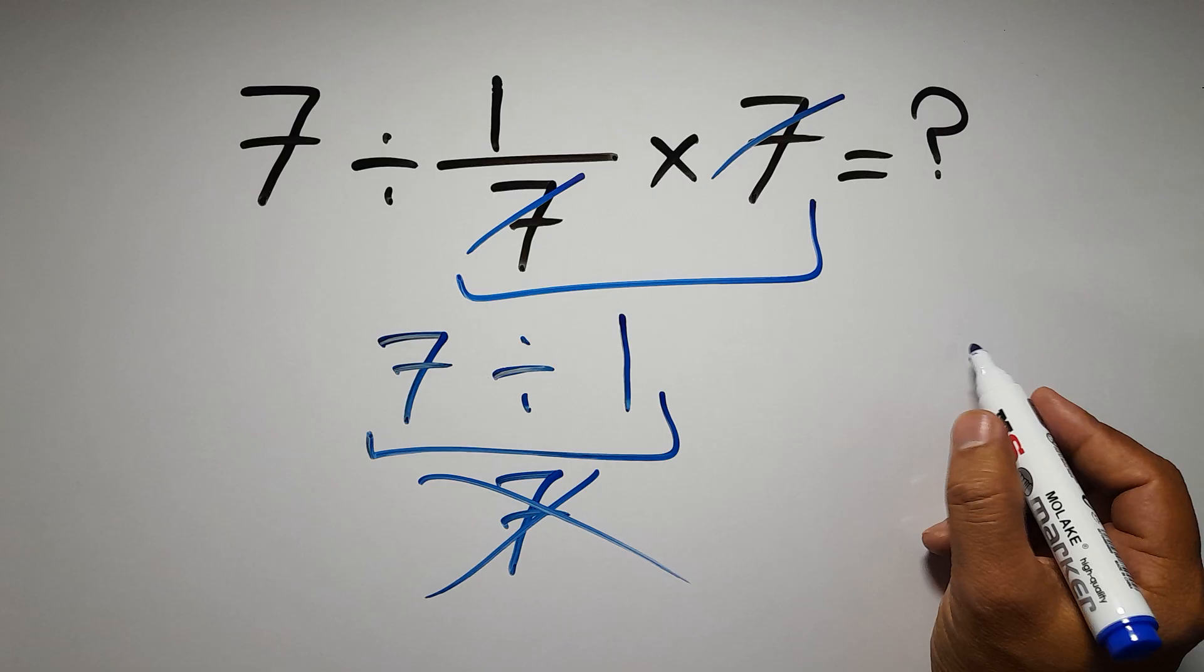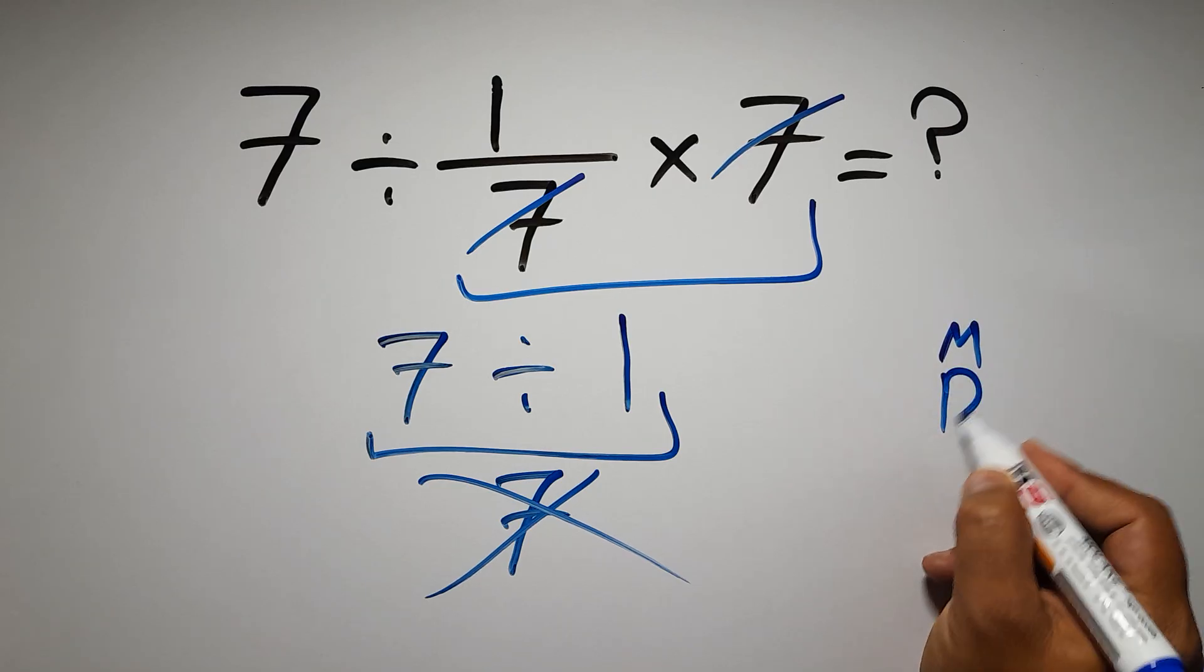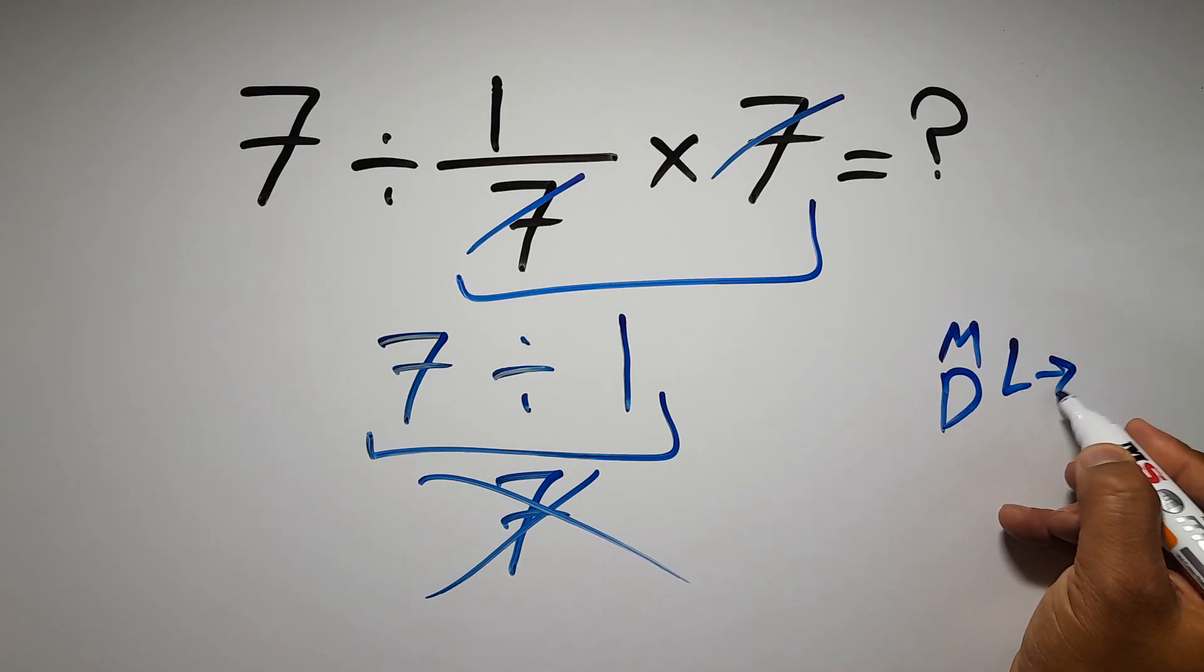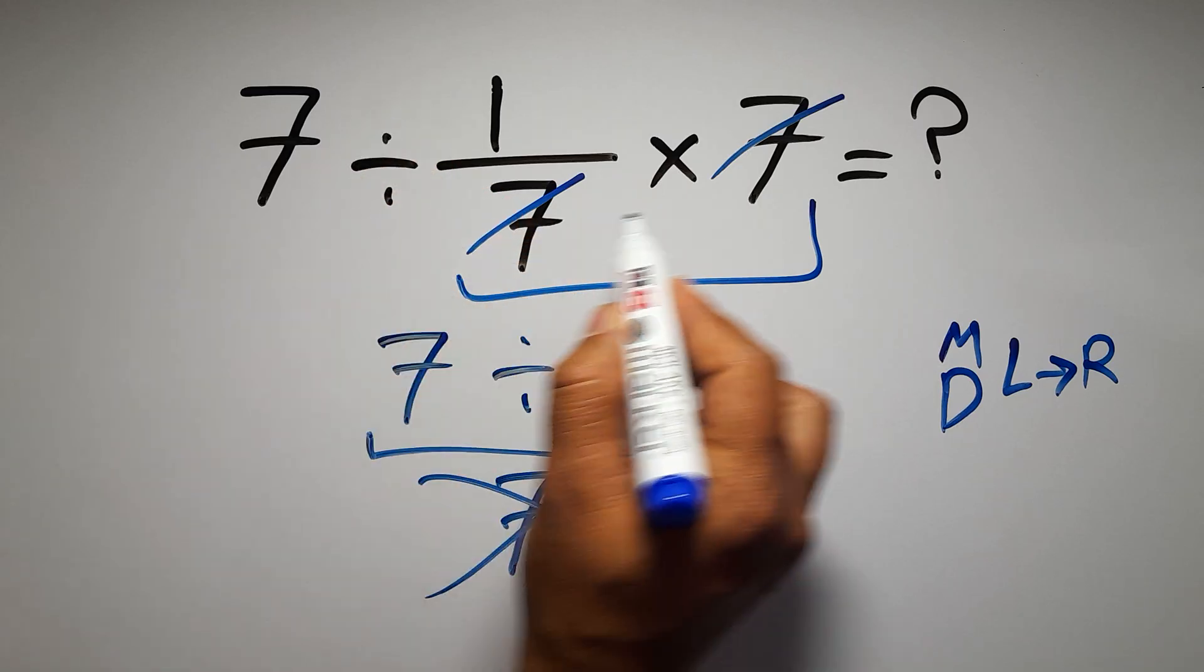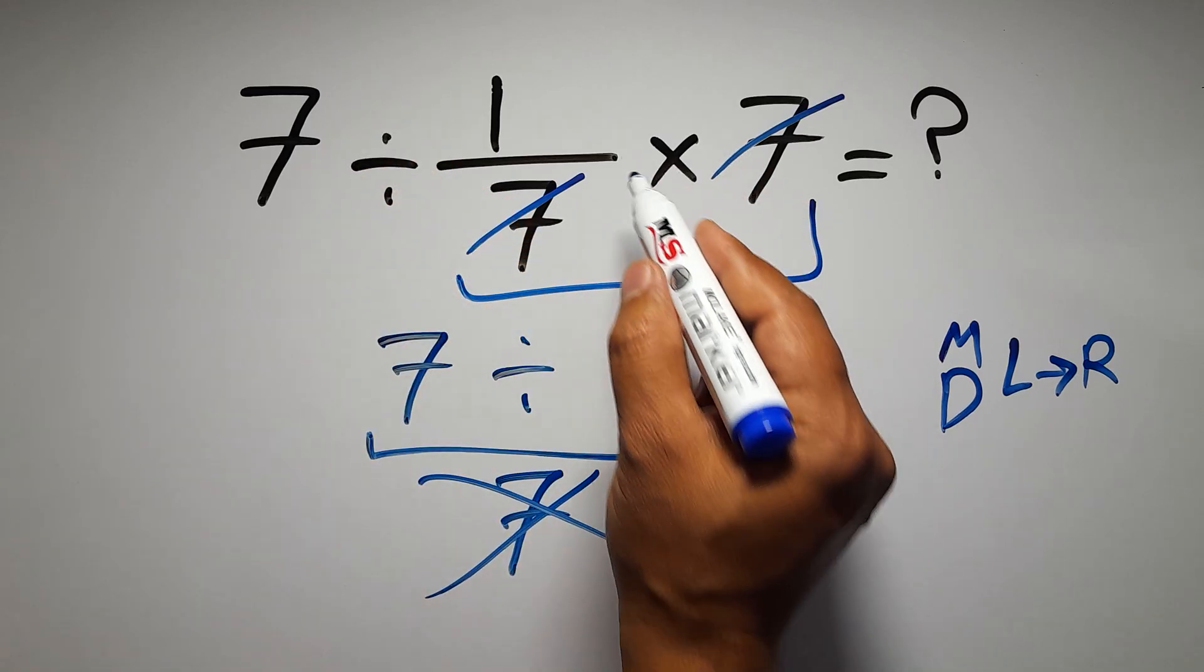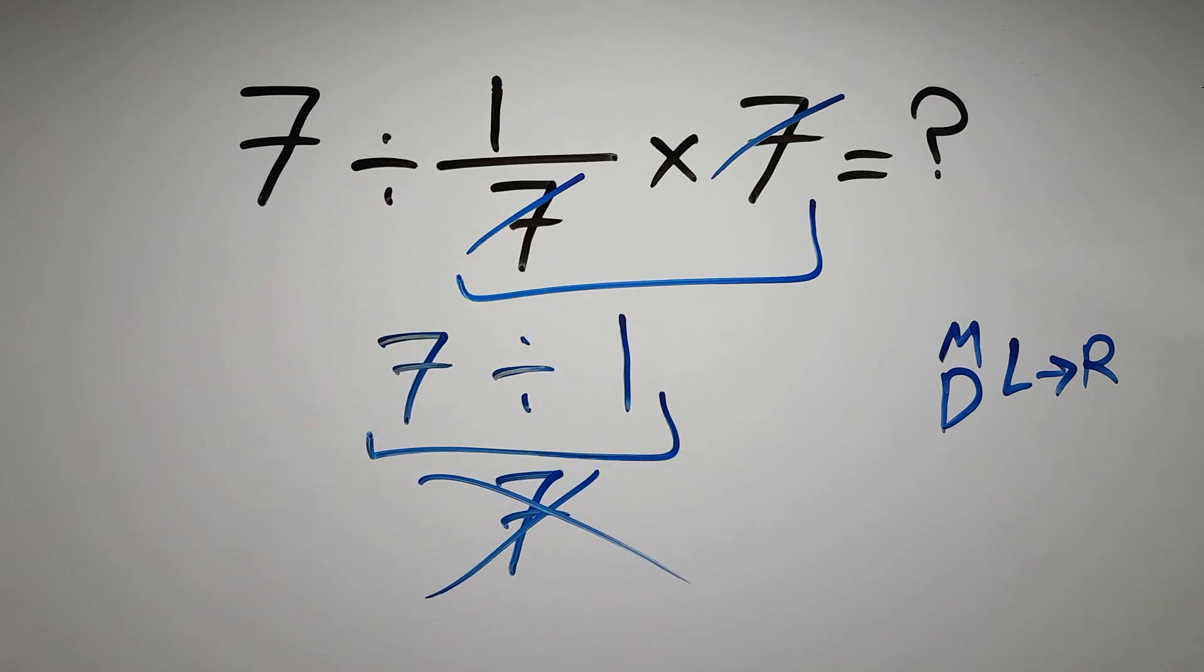according to the order of operations, multiplication and division have equal priority and we have to work from left to right. So here first we have to do this division, then this multiplication. If we do this multiplication before this division, it is wrong.